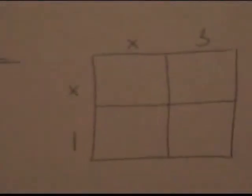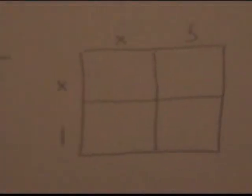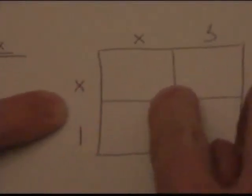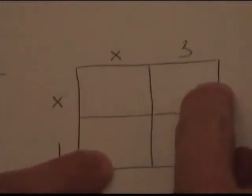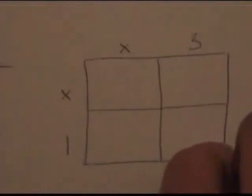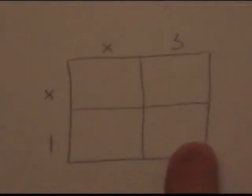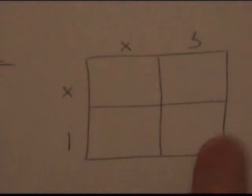Now you can see how this is a pictorial representation of what we just did. The x by x box represents the x squared algebra tile that we just used. The x by 3 and x by 1 boxes represent the skinny rectangles. And the 3 by 1 box represents the small squares.